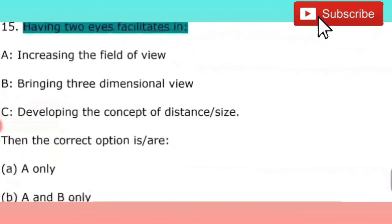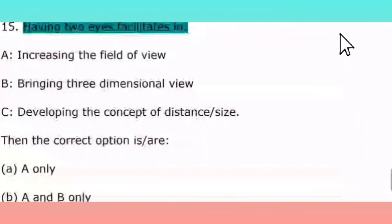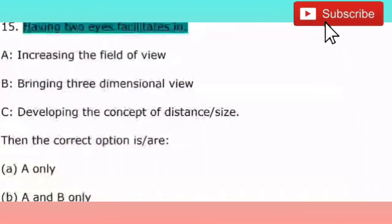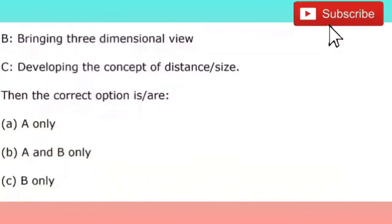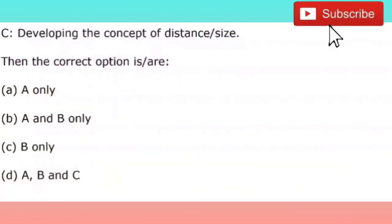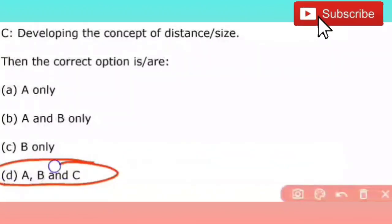The last question: having two eyes provides which facilities? Options are: A — increasing the field of view; B — bringing three-dimensional view; C — developing the concept of distance and size. You need to identify the correct option. All three options are correct. So the right answer is D — A, B, and C.